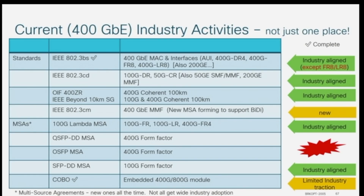I actually chair this one — the 100 Gig Lambda MSA. This is all of the 100 gig per lane optical PMDs, all being defined. The initial one was defined up in the IEEE, and all the follow-ons are being defined in the MSA, because a group of us wanted to move quicker than the IEEE could. So we generally have good alignment here.